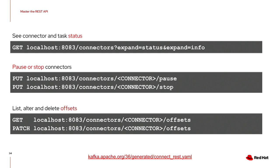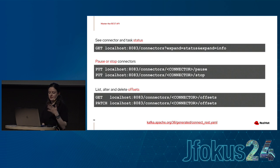You can pause and stop connectors — pause has been around a while, but stop is fairly new. The difference is: if you pause, connector processes are still running but not flowing data; if you stop, everything stops, saving resources, while maintaining the connector name and runtime state. You can also list, alter, and delete offsets — a fairly new endpoint. An offset in Kafka specifies where in the stream you've gotten to, and these endpoints allow you to better handle where your connectors will process data from.